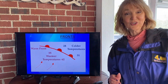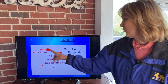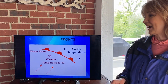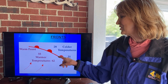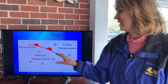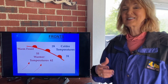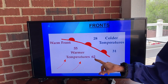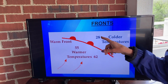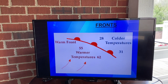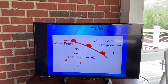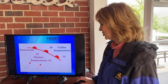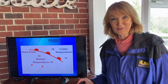The opposite is true of a warm front. This red line shows you which way the warm air is moving, with these little half circles. This warm front is the front of warm air — 55 degrees, 62 degrees — and you can see the air out ahead of it is colder at 28 and 31. Instead of having triangles, we have half circles that show you which direction the warm front is moving.